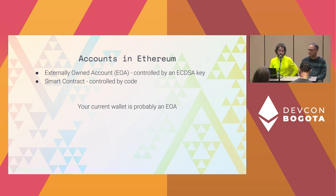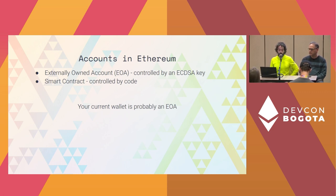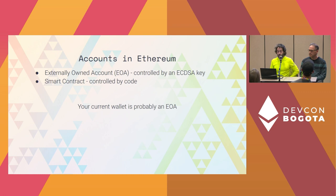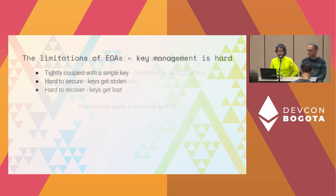An externally owned account is a one-size-fits-all ECDSA key. The other option you have is if you want to have your own smart contract controlled by code, but you would still need an EOA to interact with it. Your current wallet is probably an externally owned address.